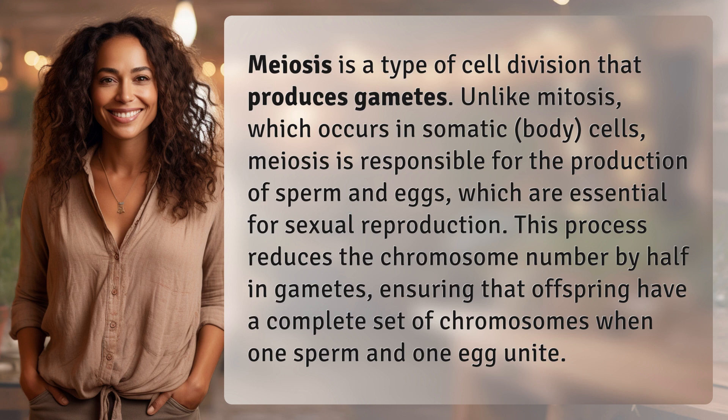This process reduces the chromosome number by half in gametes, ensuring that offspring have a complete set of chromosomes when one sperm and one egg unite.